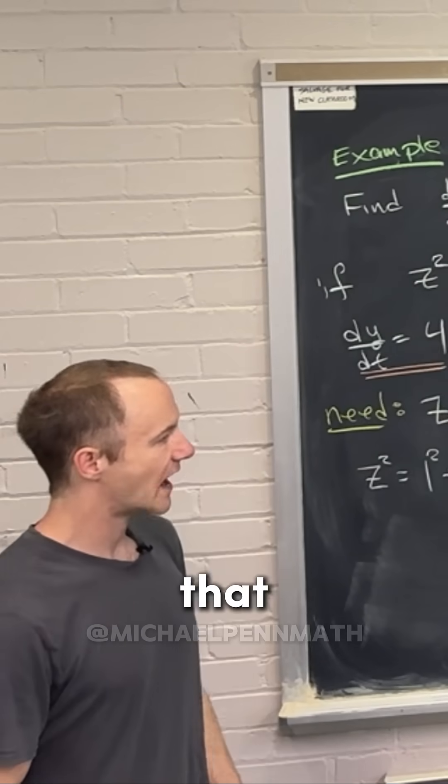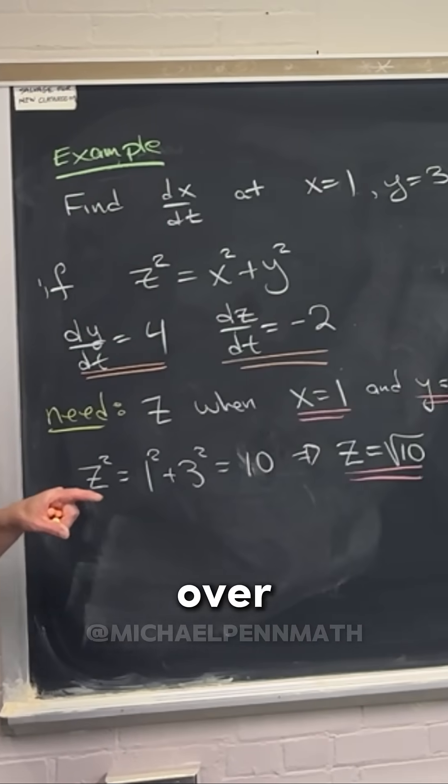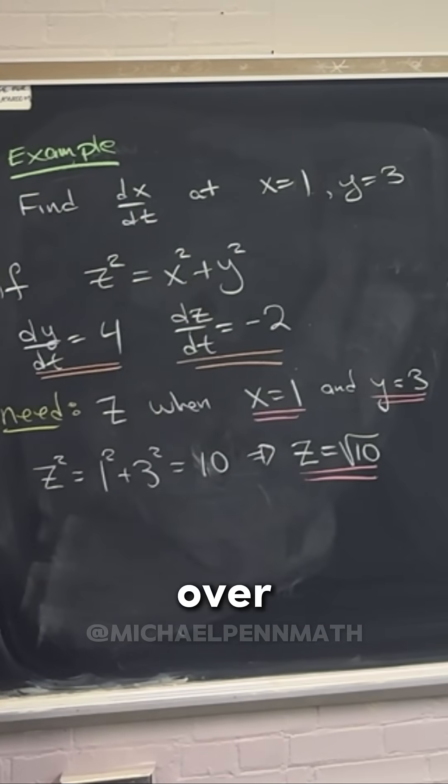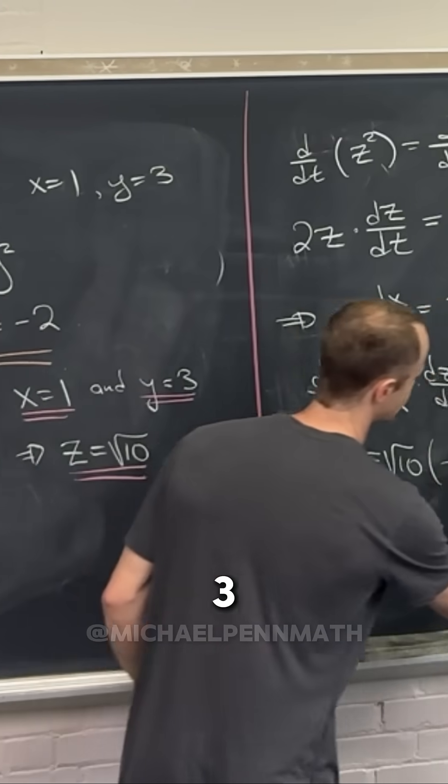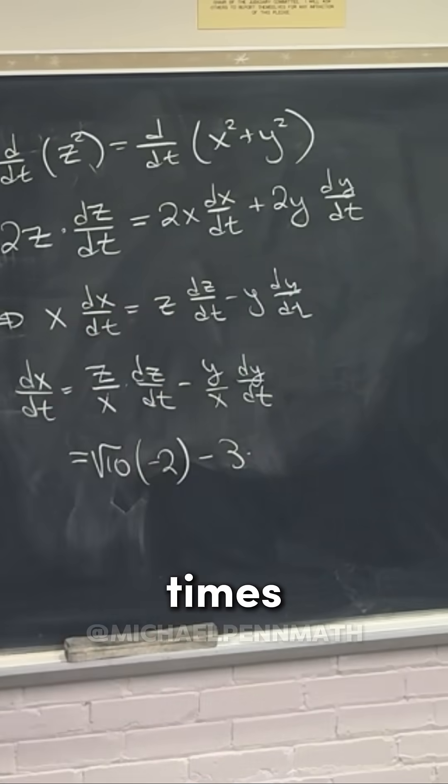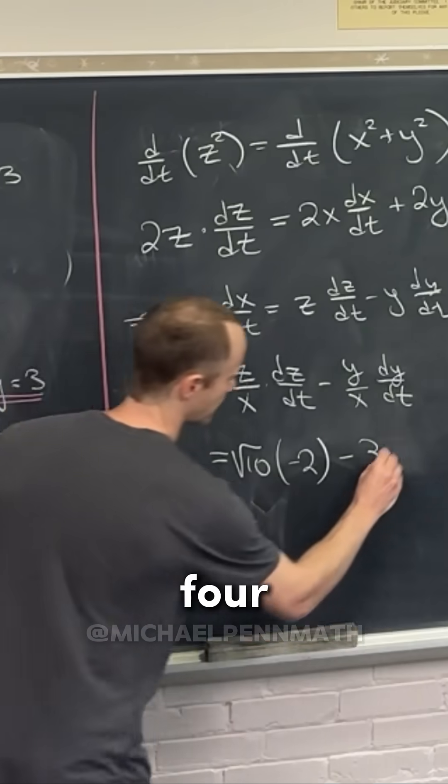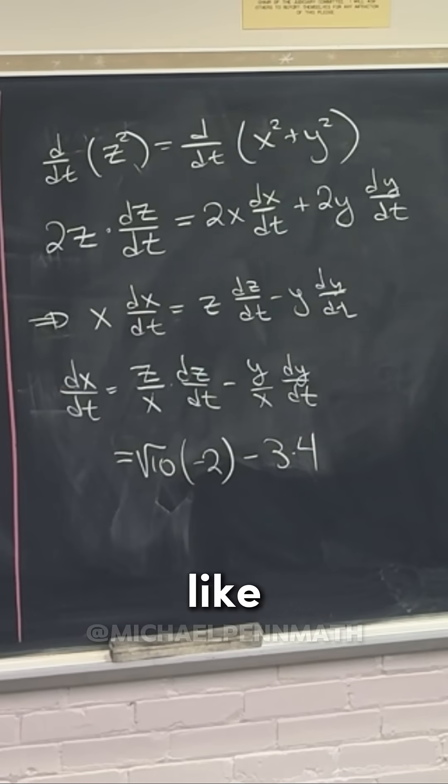And then from that we subtract y over x, so let's see, y is 3 over x is 1, so 3 over 1 is 3, so minus 3, times dy/dt is given, that's going to be 4. So we're given something like that.